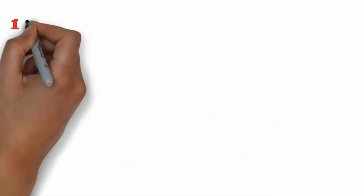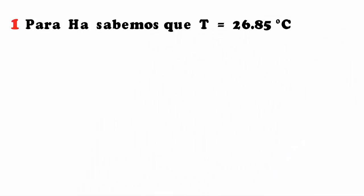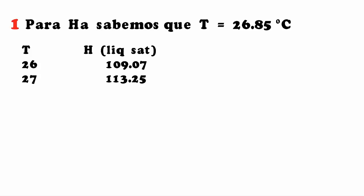We proceed to calculate each of these enthalpies. To calculate HA, we know that the temperature of stream A is 26.85°C. For this, we look up in our temperature tables the values at 26 and 27°C, since the exact value of 26.85 cannot be found directly.